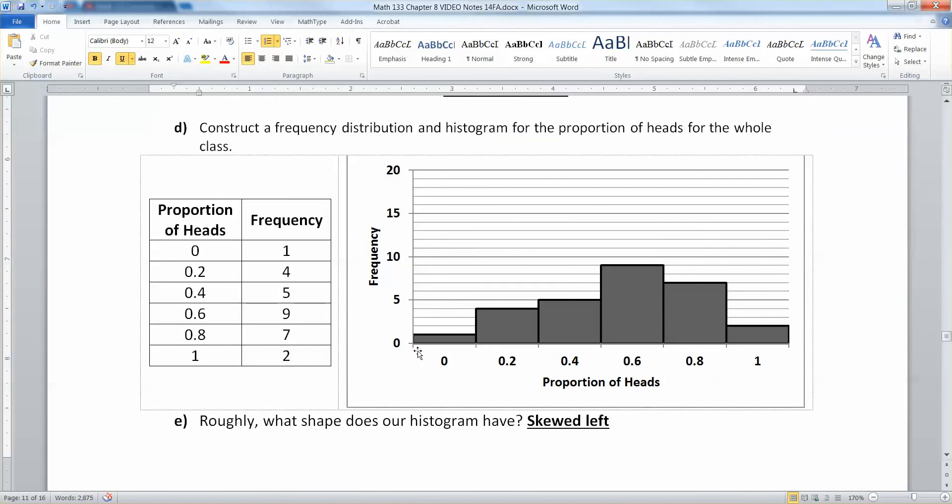There we have the graph. You can see I made it so the bars touch because this is a histogram. So we have those there. And you can see this kind of has a little bit of a skewed left distribution for this particular class that I did. Some of my other classes were more symmetric, but this one was skewed left.